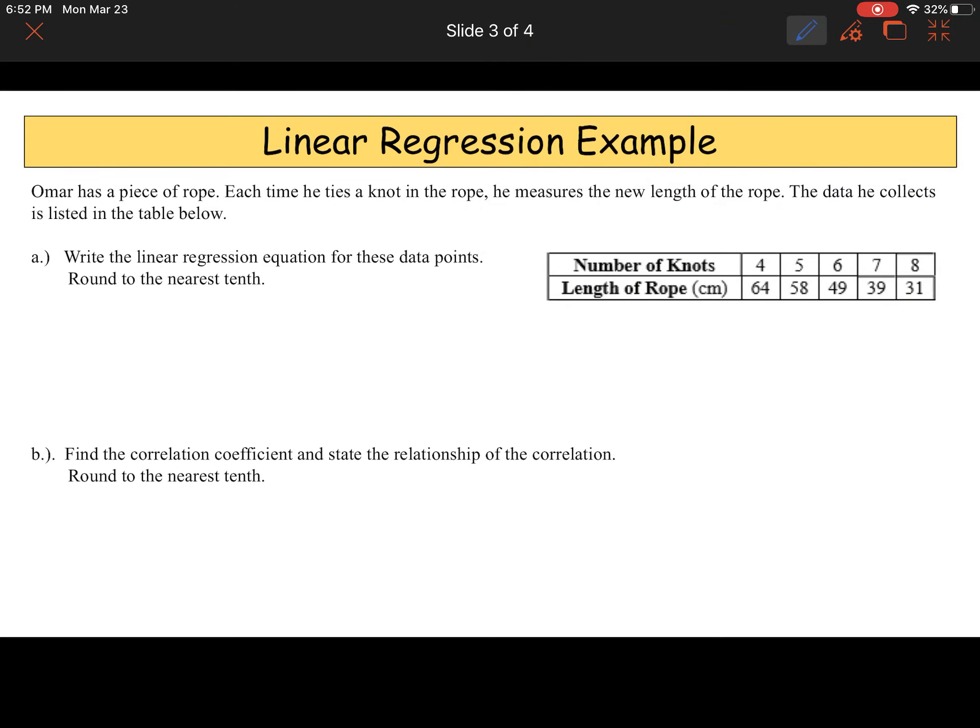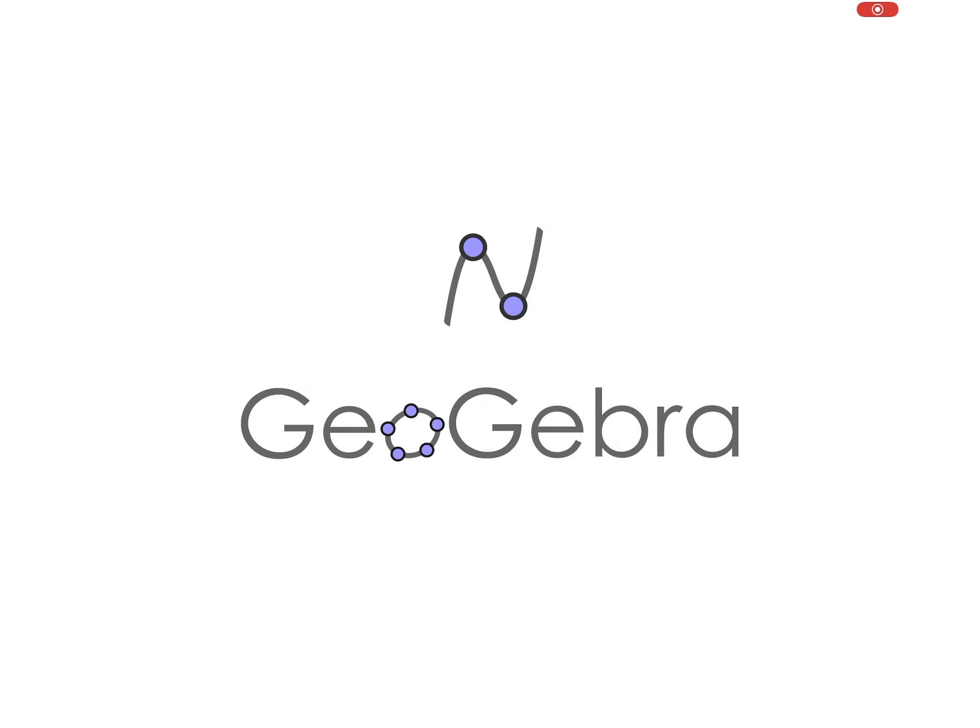So let's look at an example of a linear regression again. Very similar to what we've already done. We're just going to practice it. So it says, Omar has a piece of rope. Each time he ties a knot in the rope, he measures the new length of the rope. The data he collects is listed in the table below. Think about the rope. Every time you tie a knot in the rope, the length of the rope is actually decreasing. You're losing rope every time you tie a knot in it. So, part A says, write a linear regression equation for these data points. Round to the nearest tenth. As soon as you see that, you're going to go right to GeoGebra.